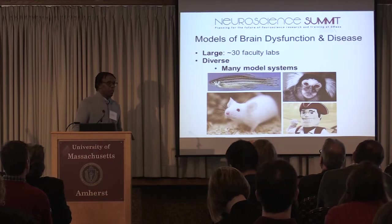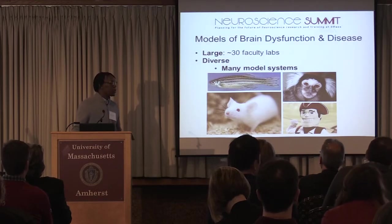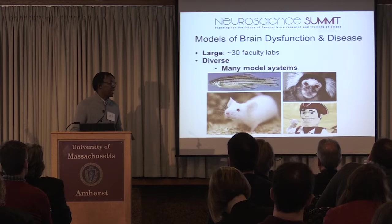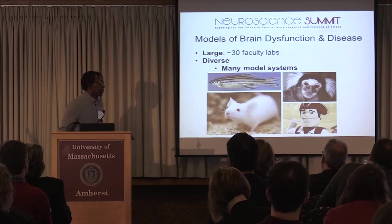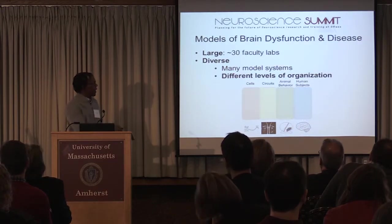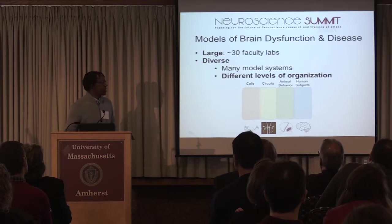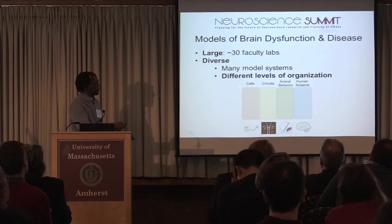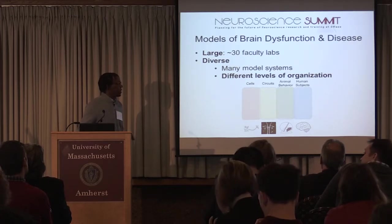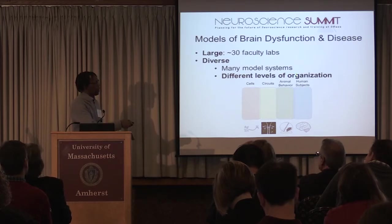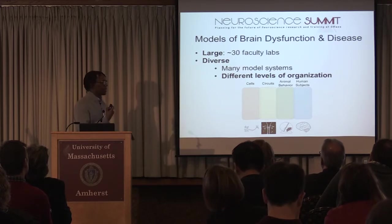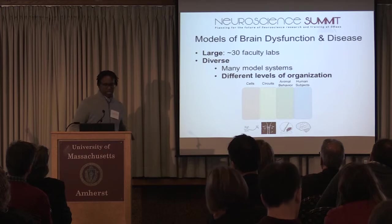As you've heard in earlier presentations, we utilize many different model systems, including zebrafish, rodents such as mice, rats, and hamsters, the marmoset, non-human primates, and humans. We span the gamut of biological organization — we study brain dysfunction at the level of single cells, how dysfunction affects cellular activity within circuits, animal models of different neurological or neuropsychiatric disorders, and of course, the effect of these disorders in human subjects.